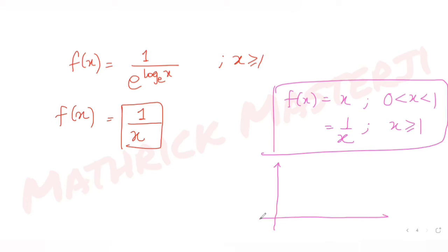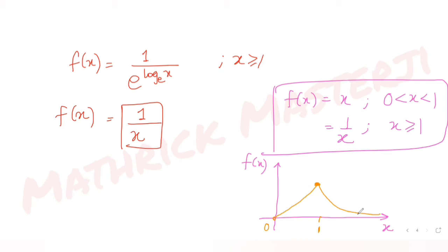Drawing the graph: from 0 to 1 the function is y = x, which is a straight line. Beyond x = 1, the function is y = 1/x, which is a curve that approaches 0 as x goes to infinity. At x = 1, the function transitions from the straight line to the 1/x curve.